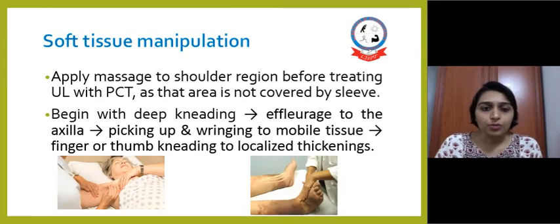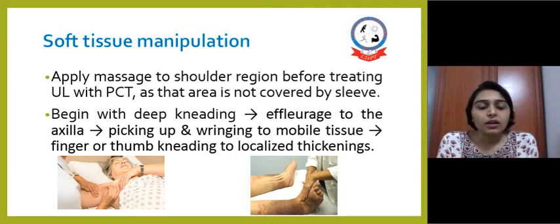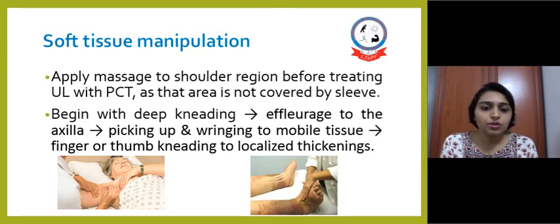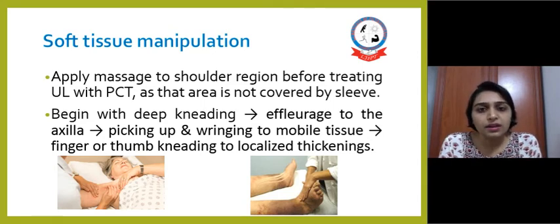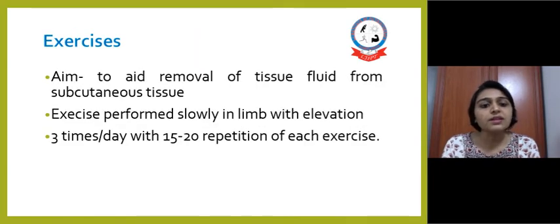Soft tissue manipulation is a very important part of physiotherapy. Before treating the upper limb with pneumatic compression therapy, apply massage to the shoulder region — the area not covered by the sleeve. Techniques include deep kneading, effleurage to the axilla, picking up and rolling to mobilize tissue, and finger and thumb kneading to localized thickening. The same treatment can be applied near the pelvic region where the sleeve cannot provide adequate compression.